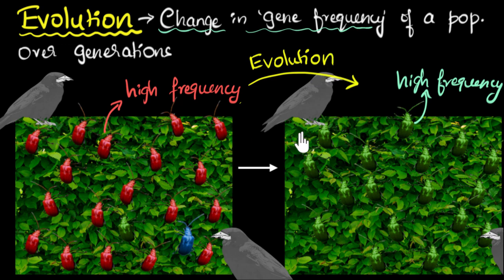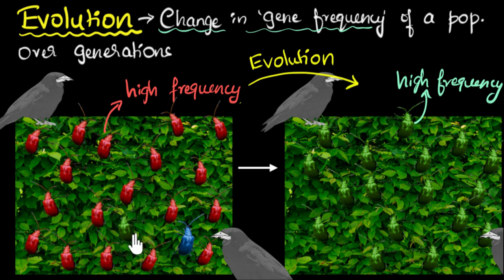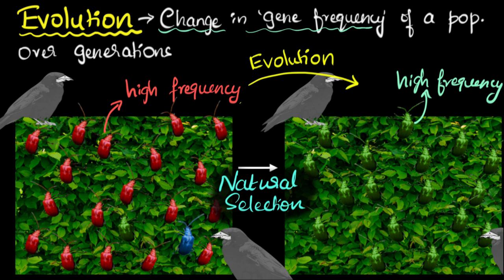So why did this happen? What caused this evolution? Two things. First, mutation caused some changes in the traits, allowing different colored beetles to be formed. Second, one particular variant — the green colored one — had an advantage, meaning a higher chance of survival and therefore a higher chance of reproduction, because of which their numbers started increasing. This process, in which genes or traits with an advantage start being passed along more and more and increase in number, is what we call natural selection.